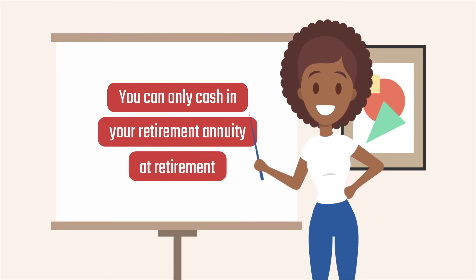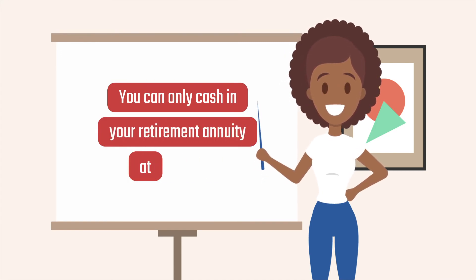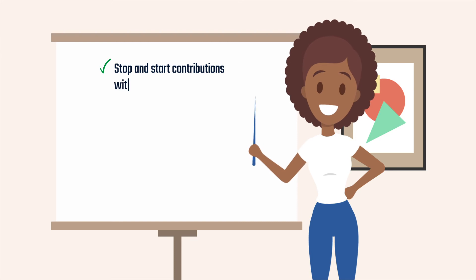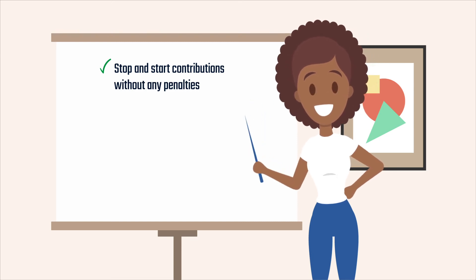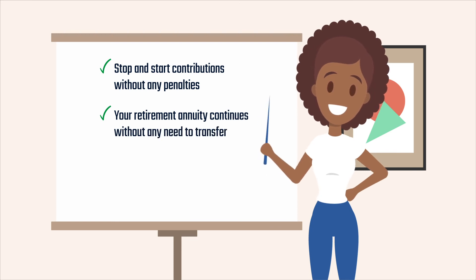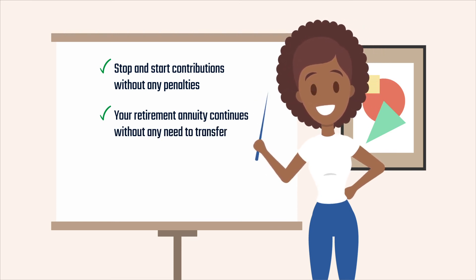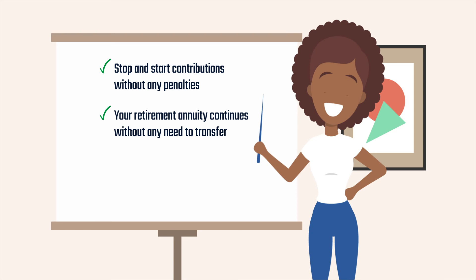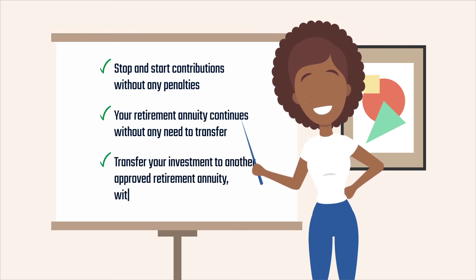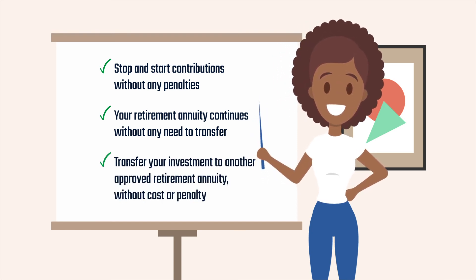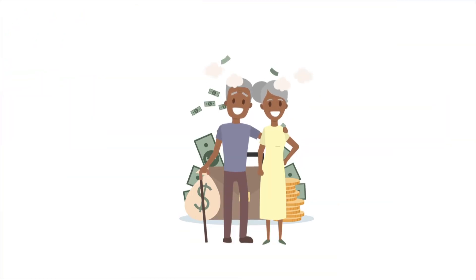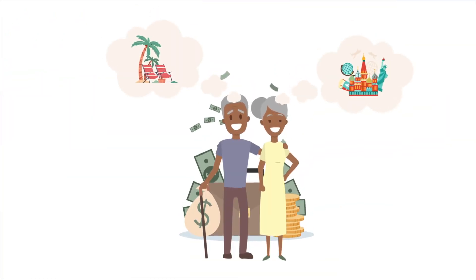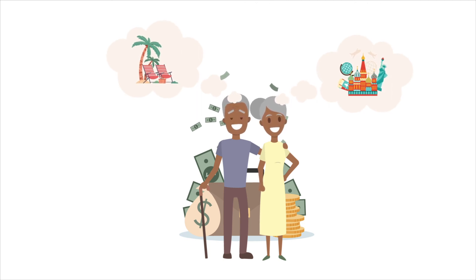You can only cash in your retirement annuity at retirement. You may stop and start contributions without any penalties, and if you change jobs, your retirement annuity continues without any need to transfer. You may, at any time, transfer your investments to another approved retirement annuity without cost or penalty. At retirement, you will convert your retirement annuity to a living annuity to receive a monthly income in retirement.